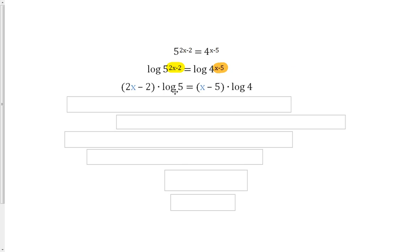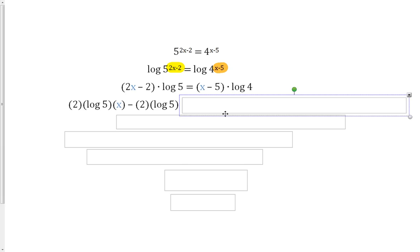And what this does is we have log of 5 and log of 4, which are simply constants being multiplied by an algebraic function. So all we have to do from this point forward is distribute and do a lot of nasty algebra. I'm going to go quickly, but I'll show you every step. So we're going to distribute this log of 5 to the 2x and the negative 2 on the left side. So we have 2 log 5x minus 2 times log 5 equal to x times log 4 minus 5 times log 4.